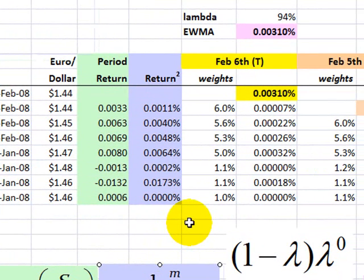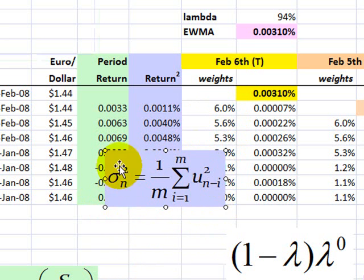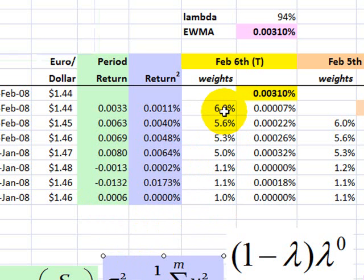What is the exponentially weighted moving average? Well, it's similar. However, we're still going to use these squared returns that are a historical series. But unlike this simple approach, which takes an average and therefore gives each squared return the same weight, we're going to weight the more recent squared returns, we're going to give them a higher weight.